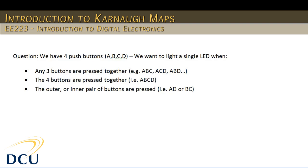Let's take an example problem. The question is that we have four push buttons — A, B, C and D — and we want an LED to light when certain conditions occur. The first condition is if any three buttons are pressed at the same time: so if the first three buttons A, B, C are pressed, or if A, C, D are pressed, or A, B, D, and so on — there are several other combinations of that condition.